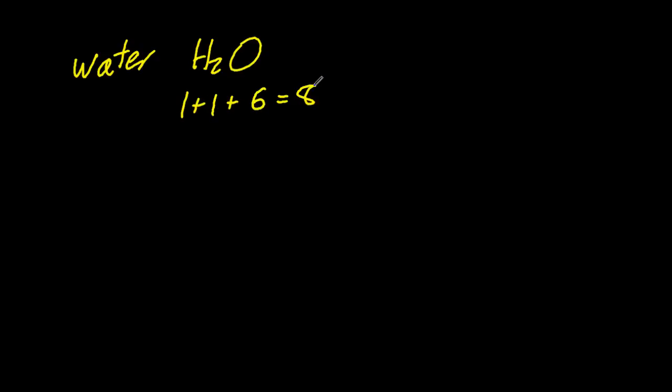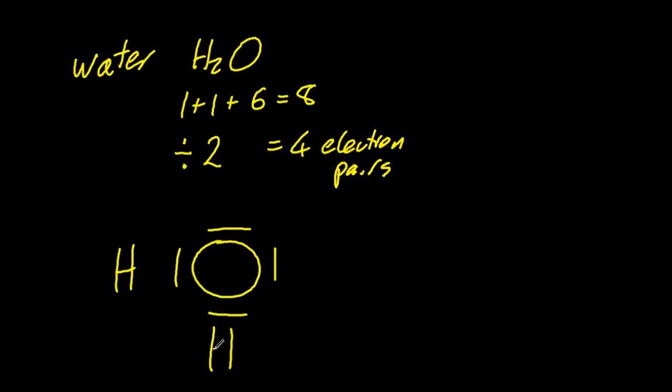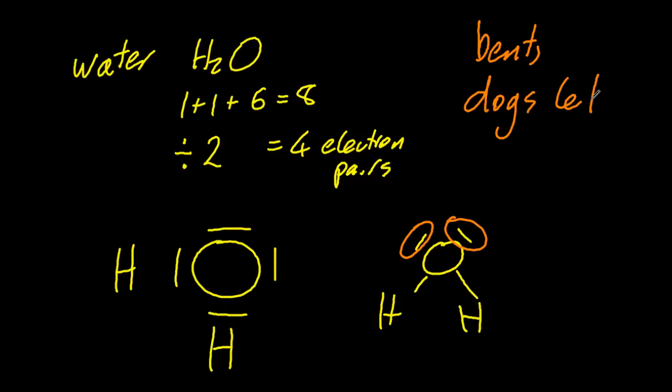Another way to do a Lewis structure is to add up the valence electrons, 1 and 1 and 6 for water gives you 8. Divide that by 2, that gives me four electron pairs. Then I draw out the atoms as needed, and make sure I've satisfied the octet and the duet rule. So water has two lone pairs. Both of those are extra repulsive, and so they force the legs of the water molecule together. The shape is a dog's leg, or bent, and this new compressed angle is 105 degrees.